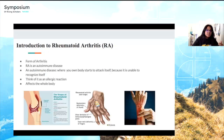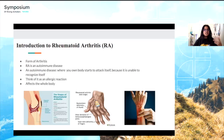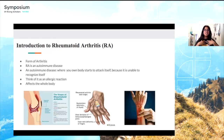An autoimmune disease is when your own body starts to attack its healthy tissue because it's unable to recognize itself. It's similar to an allergic reaction. For example, many people are allergic to peanuts — when a peanut is ingested, the body can't recognize it, treats it as a pathogen, and antibodies flag the antigens on it, signaling T cells and lymphocytes to destroy it. That's why you get swelling and feel ill after eating a peanut.